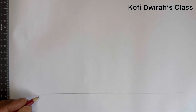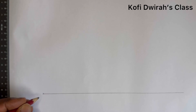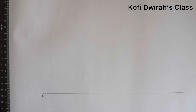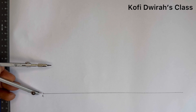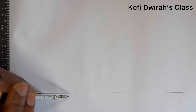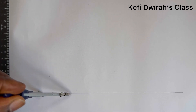We consider this point to be point A. Then at point A, open your compass to any radius and draw an arc.